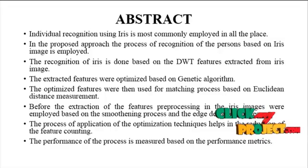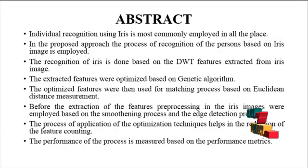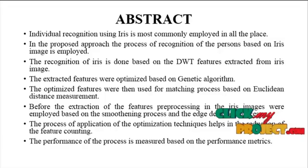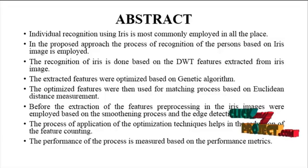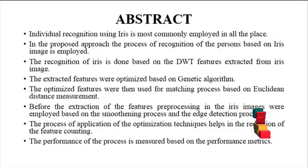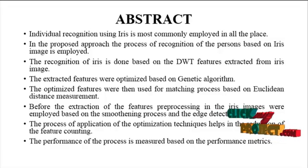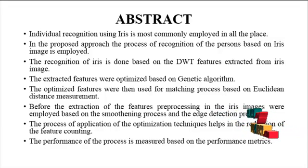Before feature extraction, preprocessing on the iris image is employed, based on the smoothening process and the edge reduction process. In smoothening and edge reduction, noise removal and iris extraction are carried out. The application of optimized techniques helps in the reduction of feature count. Performance is measured based on the performance matrix. Here, 512 features are extracted, so we need not apply the optimization method.